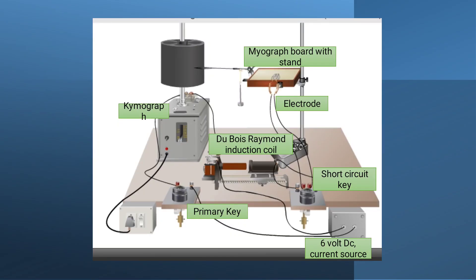Now coming to the secondary circuit — it starts with the black part of the Dubois-Reymond induction coil, that is the secondary coil. This secondary coil is attached with the short circuit key. From the short circuit key, the electrodes go directly to the myograph board where the nerve muscle preparation is placed. Whenever there is current in the primary coil, this current will be induced into the secondary coil. If the short circuit key is off, this current will move in the secondary circuit, and with the help of the electrode we can apply this current on the nerve muscle preparation.